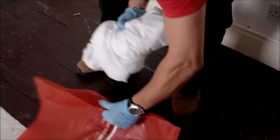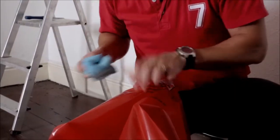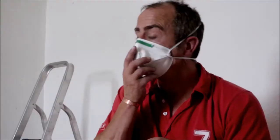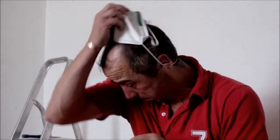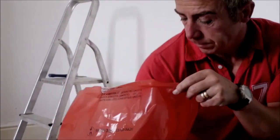Remove the coveralls by turning them inside out as you take them off and place these in the red asbestos bag, followed by the gloves. Lastly, remove the respirator and place this in the red asbestos bag.